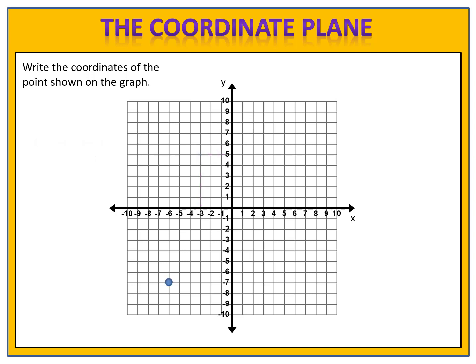How about this point that's in the third quadrant? Can you write its coordinates? Pause the video and come back when you've finished. We notice that this is at the negative 6 on the x-axis. Then we look across to the y and see that we're at negative 7. X is negative 6, y is negative 7, so the coordinates are negative 6 comma negative 7.